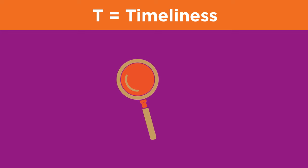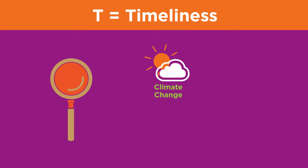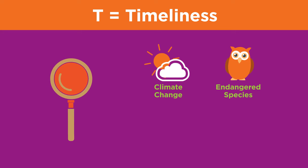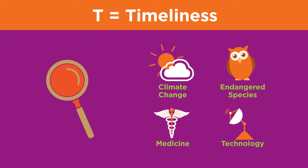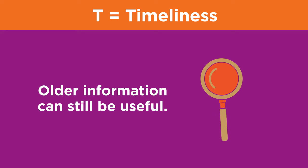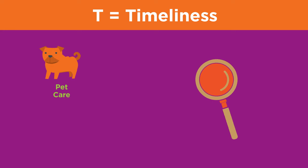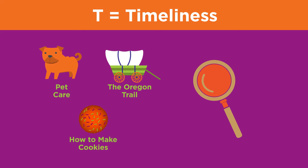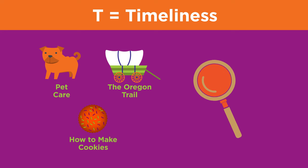Scientists and researchers discover new information all the time. Therefore, your sources of information need to be up to date for some topics like climate change, endangered species, medicine, or technology. Other topics have information that does not change much over time and older information can still be useful. For example, pet care, the Oregon Trail, and how to make cookies are topics that have not changed significantly over time, so older articles on these topics would be useful.